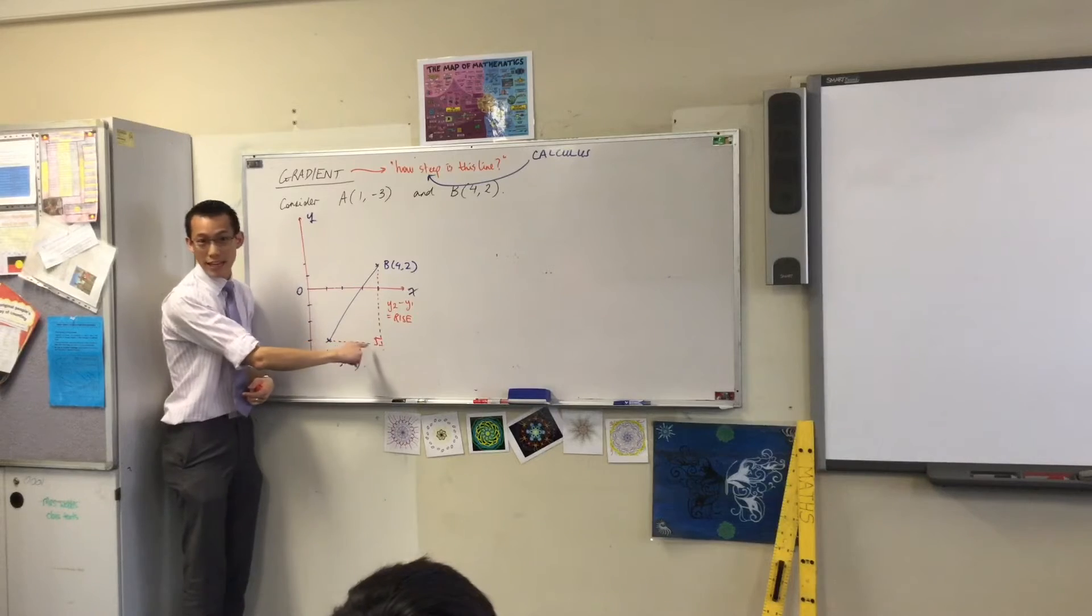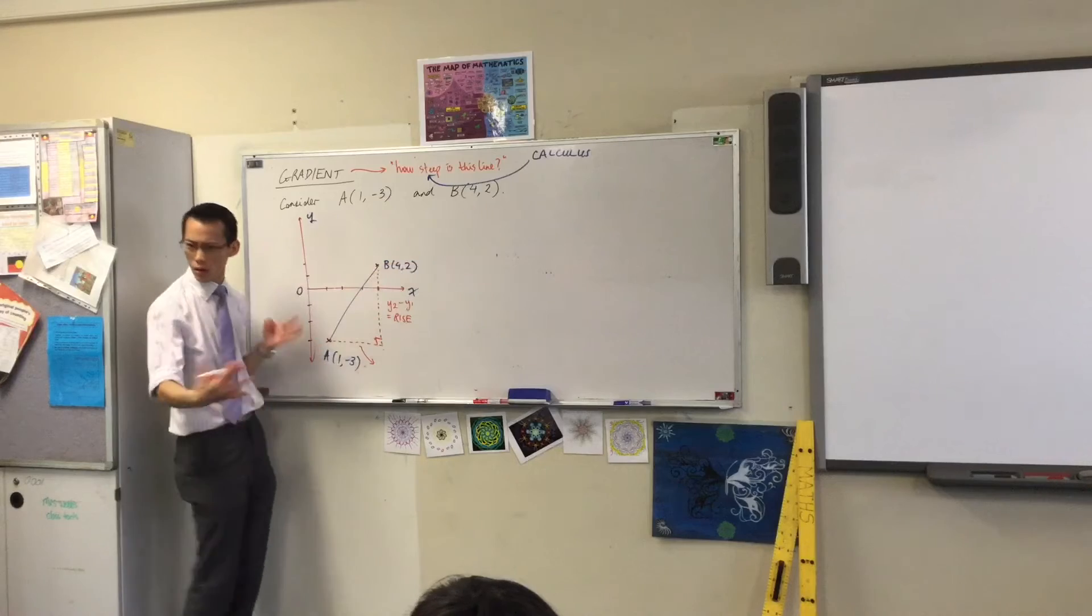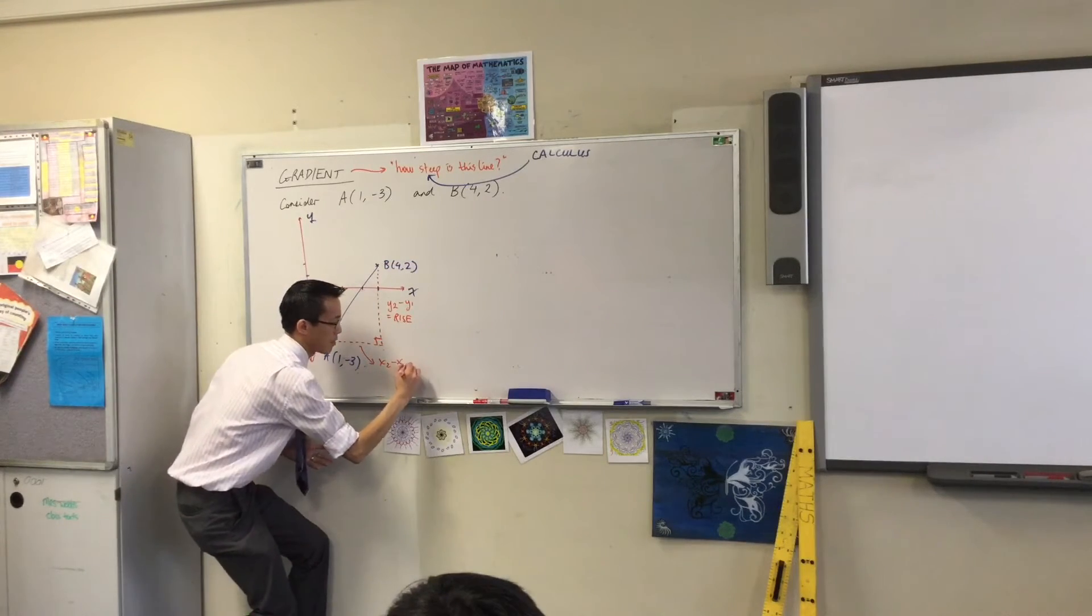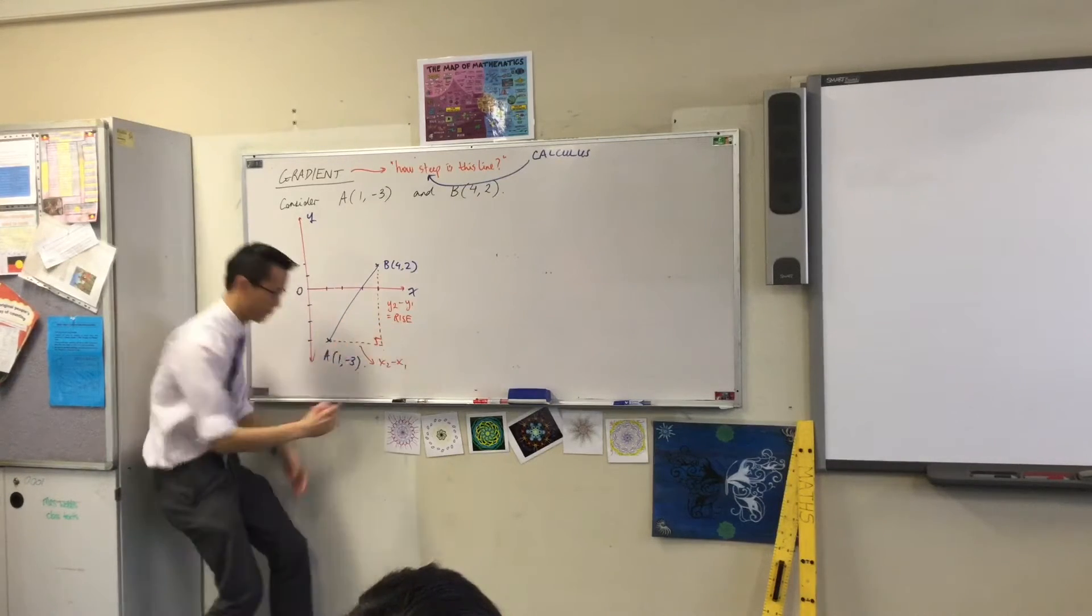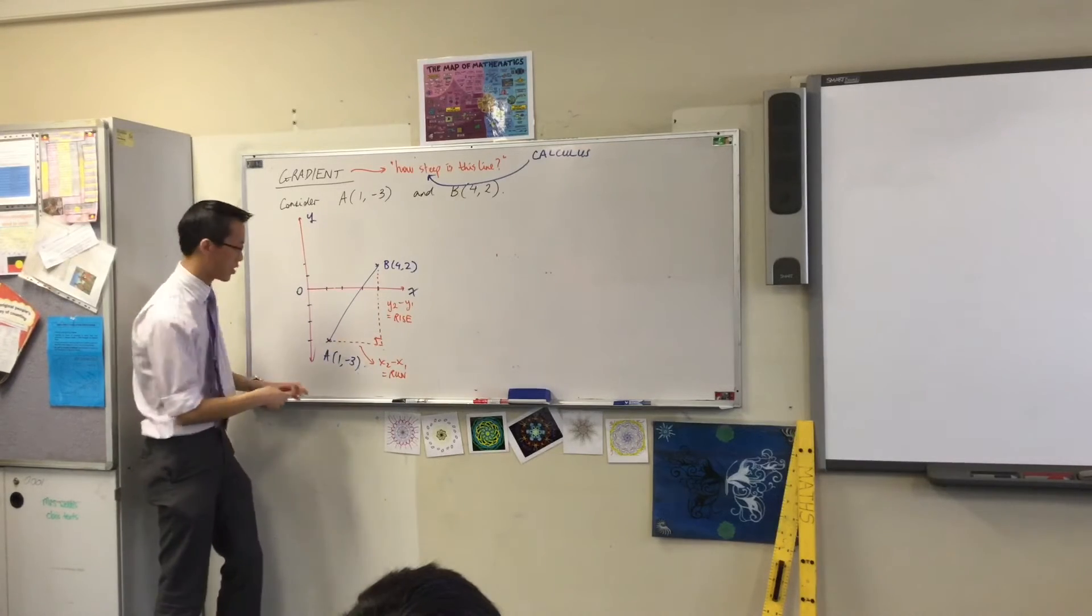In the same way, you've got this guy down the bottom. Rather than y2 minus y1, it's horizontal, so therefore, it's x2 minus x1. In exactly the same way, when we talk about gradient, we give it a name. We call it run. Very good.